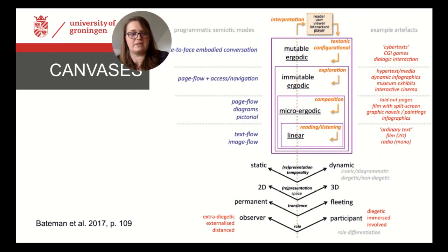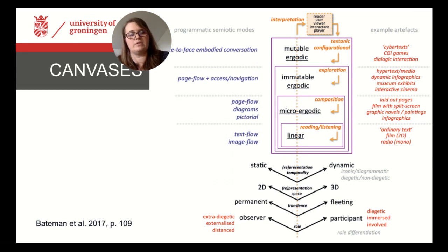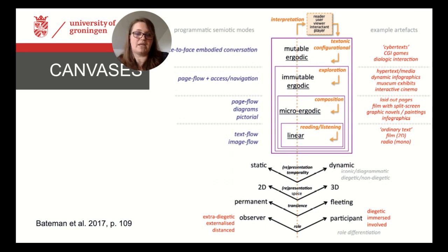If we now combine these distinctions with the dimensions for interpretation we discussed before and add an overview of potential semiotic modes that may play a role in the respective artifacts, we get a complex systematics of communicative situations. With this overview, we should be able to categorize and characterize any communicative situation and the materialities it involves for all further analysis. We see this description of the communicative situation as the first important step towards a more systematic and foundational approach to multimodality, which from now on we will take as the basis for every multimodal analysis, before we start describing the expressive forms or modes and their combinations.